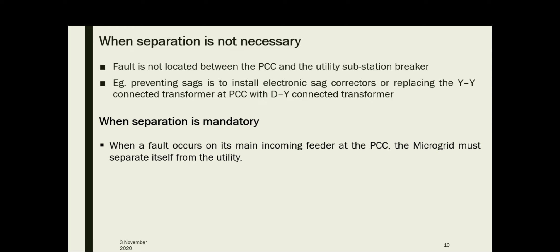The first case — when separation is not necessary — occurs when the fault is not located between the PCC and the utility substation breaker. For example, a fault causing sag on a substation bus may occur on an adjacent feeder fed from the same substation. In such cases, one option to prevent sag is to install an electronic-type sag protector, or to replace the star-star connected transformer at PCC with a delta-star connected transformer. For single-phase to ground faults, the utility delta-star transformer would ensure that the phase-to-ground voltage in the microgrid does not drop below 58%.